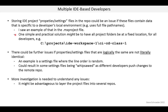One issue is that storing IDE project properties or settings files in the repo could be a problem if these files contain data specific to a developer's local environment. For example, the settings file has full path names in it — I saw that in the .mx project file, and that was of concern. One simple and practical solution might be to have all project folders at a fixed location for all developers. So as a project you agree that everyone puts their CICD class 1 IDE project folder at the same location, and then the problem goes away. I don't know if this solves everything, but it is certainly something to look at.